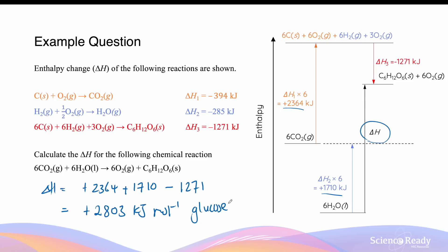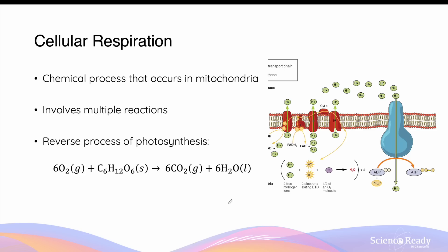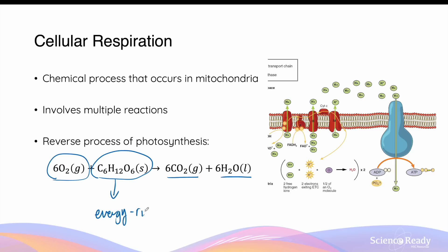Cellular respiration, also known as aerobic respiration, is a chemical process that occurs in the mitochondria of animals and certain other organisms. Like photosynthesis, respiration involves multiple complex chemical reactions, but when we look at the starting reactants and final products, it is essentially the reverse of photosynthesis. In the mitochondria, oxygen gas and glucose are broken down to produce carbon dioxide and water, and in breaking down an energy-rich substance like glucose, the cell generates energy for its use.